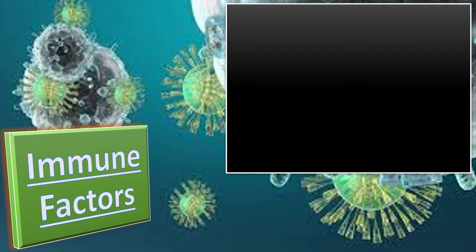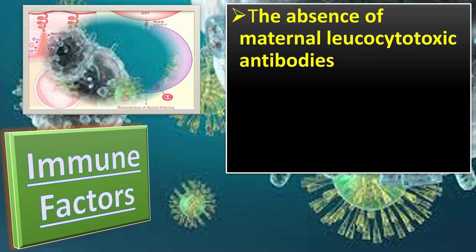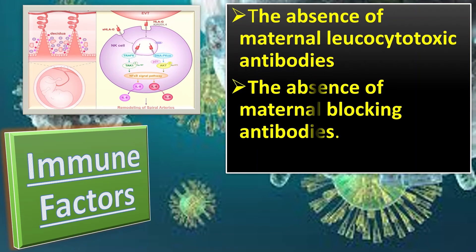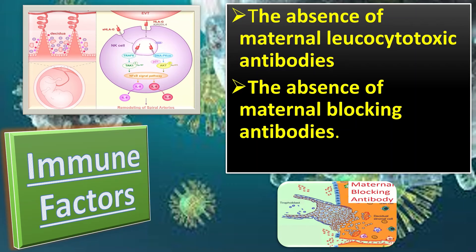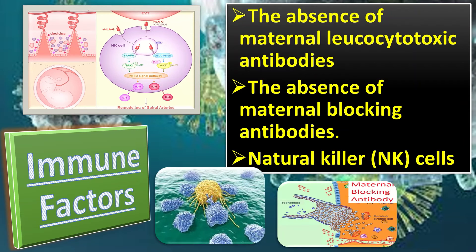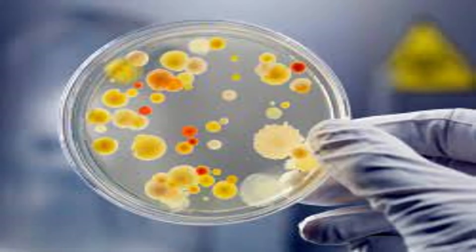Regarding immune factors, there is no clear evidence to support the hypothesis of human leukocyte antigen incompatibility between couples, the presence of maternal leukocytotoxic antibodies, or the absence of maternal blocking antibodies — hence these should not be offered routinely in the investigation of couples with recurrent miscarriages. Natural killer cells are found in both peripheral blood and uterine mucosa, and peripheral blood NK cells are phenotypically and functionally different from uterine NK cells.